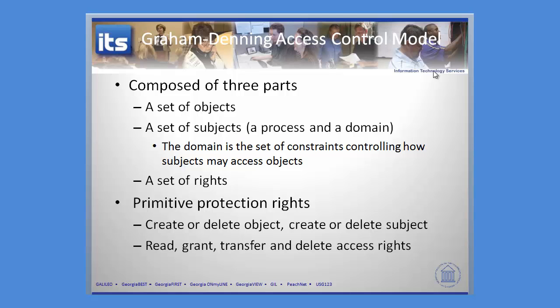We're going to start off with the Graham-Denning access control model. You've got three components within this model: objects, subjects, and rights.